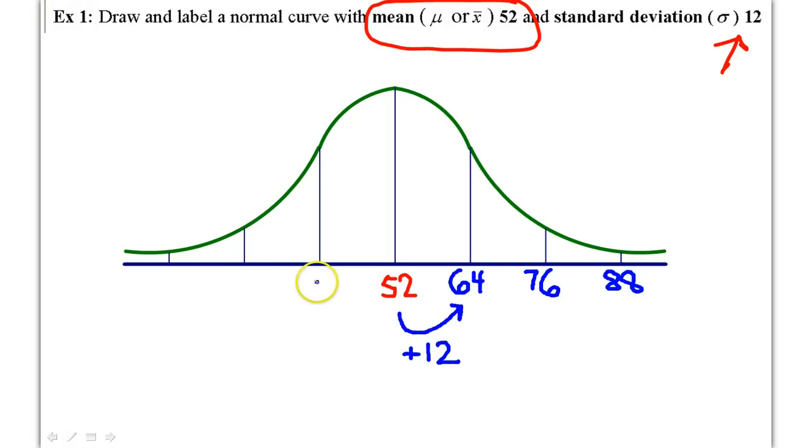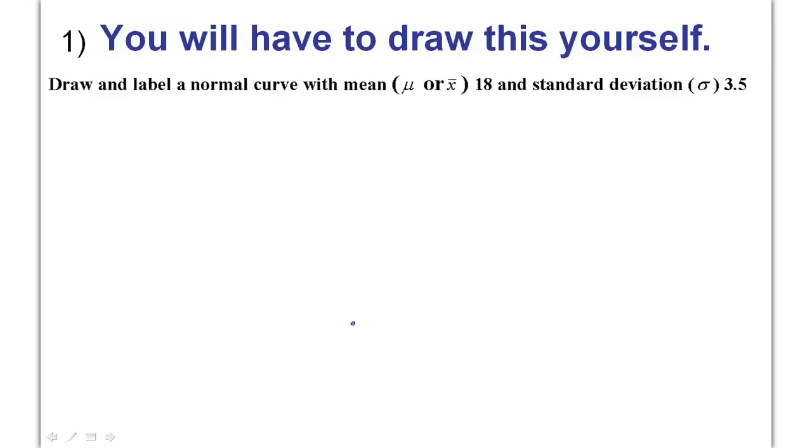What about on this side? What am I going to have to the left? 40. 40 and then 28 and then 16. 40 and then 28 and then 16. Any questions about where these numbers are coming from? Anybody lost? That's hard. Look at problem number one.